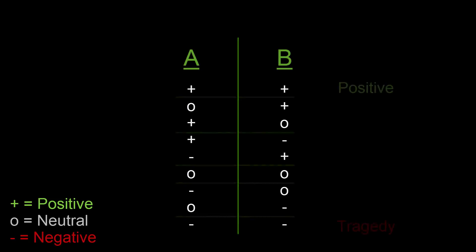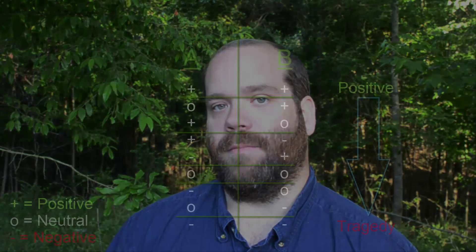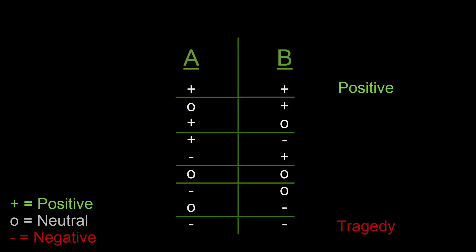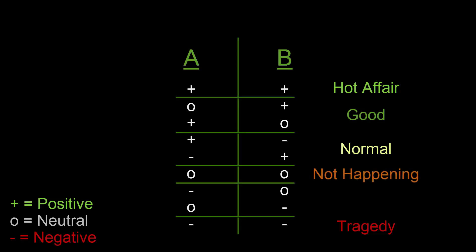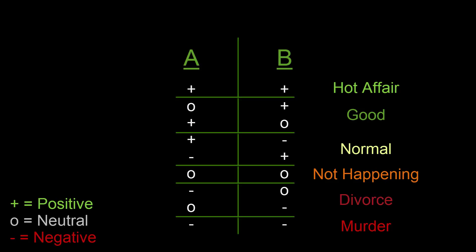As we begin to compare the possible combinations, we can go from a really positive event all the way to a tragedy. Jeff's relationship analogy was a great way to remember this: two positives would be a really hot affair, then a very good relationship, then a normal relationship with give-and-take, then one that's simply not going to happen, one that ends in divorce, and one that ends in murder. As we design, we think about how each media acts on the other and design for the best effects possible.